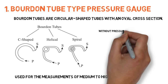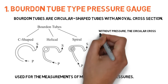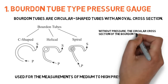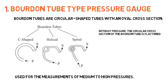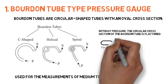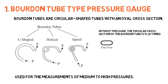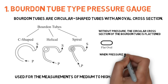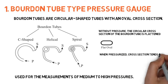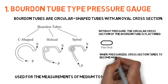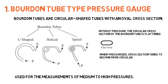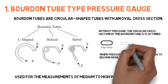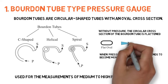Without pressure, the circular cross-section of the Bourdon tube is flattened. When these elements are pressurized, their cross-section tends to become more circular, which tends to straighten their shape.